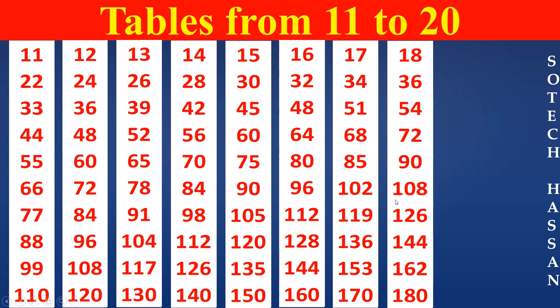18 sixes are 108. 18 sevens are 126. 18 eights are 144. 18 nines are 162. 18 tens are 180.